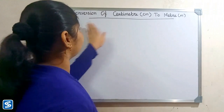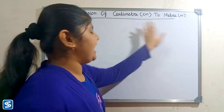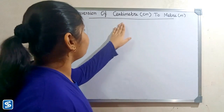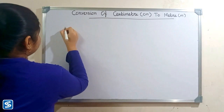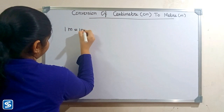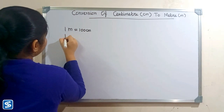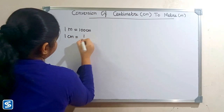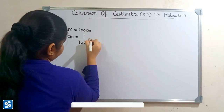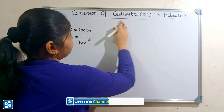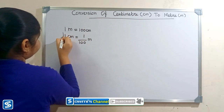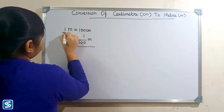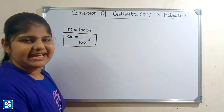Hi friends, welcome to Samush channel. In this video I'm going to teach how to convert centimeters into meters. Centimeters and meters are units of length. The short form of centimeter is cm and the short form of meter is m. We already know that one meter is equal to one hundred centimeters, so one centimeter is equal to one by hundred meters. The formula for converting centimeter into meter is: one centimeter equals one by hundred meters.